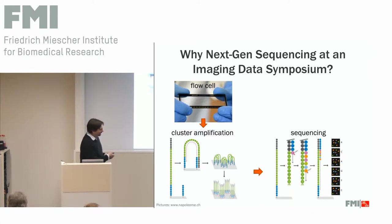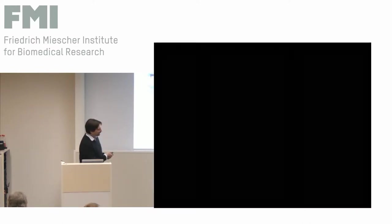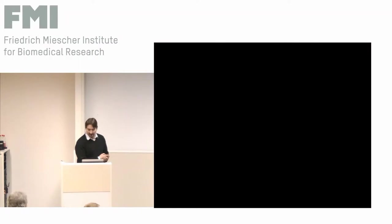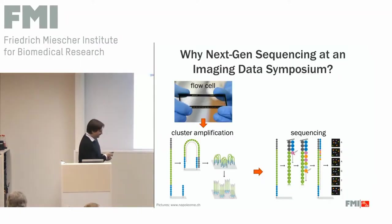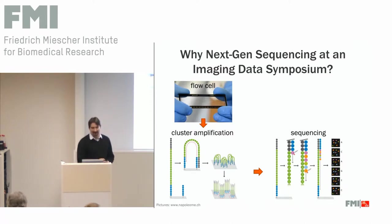The cycles basically consist of incorporation of one single base pair that is fluorescent-labelled, and then you take an image. So the sequencer is essentially a fluorescent microscope. As you cycle through this process, you're incorporating an additional base each time, taking an image. In the end, you can read off the DNA sequence by following the colours of a given colony along those images of sequential cycles. So sequencing data, at least on the Illumina platform to begin with, is imaging data too.